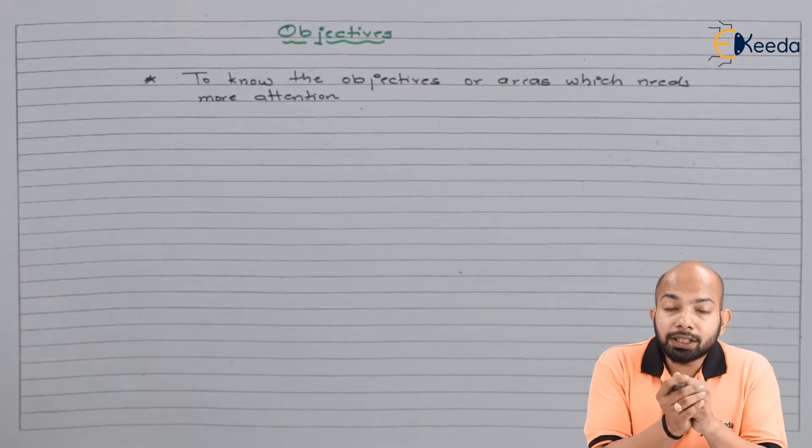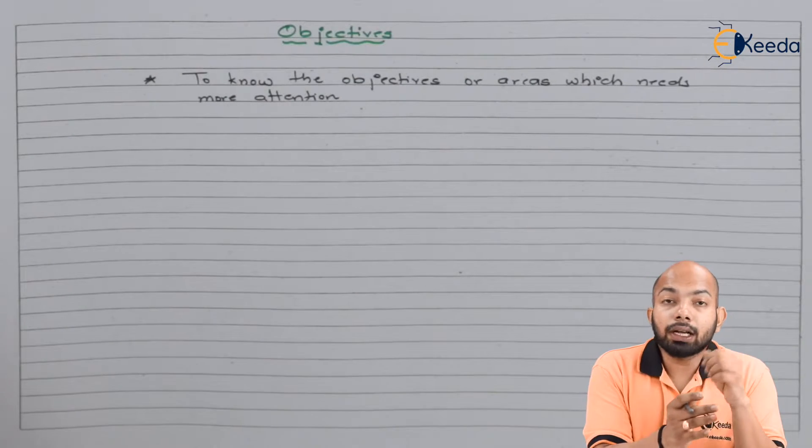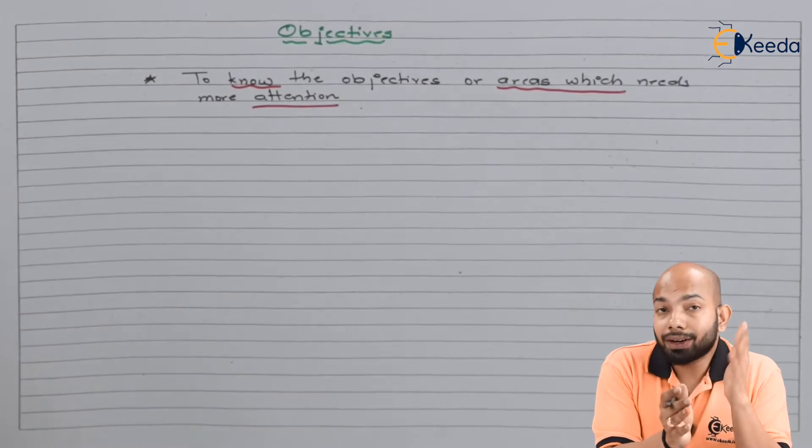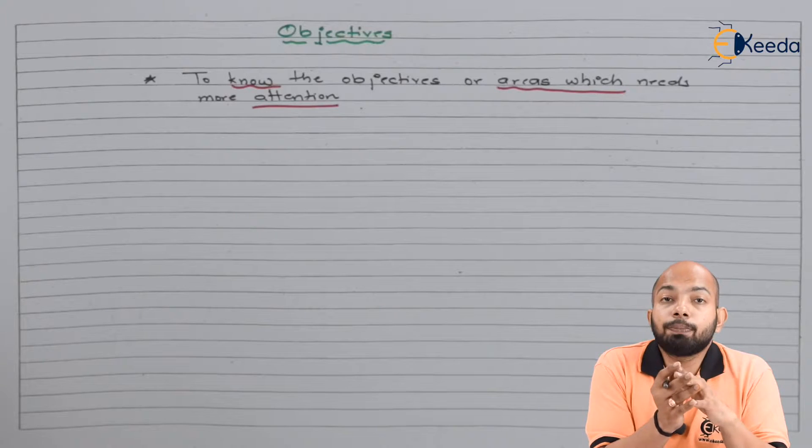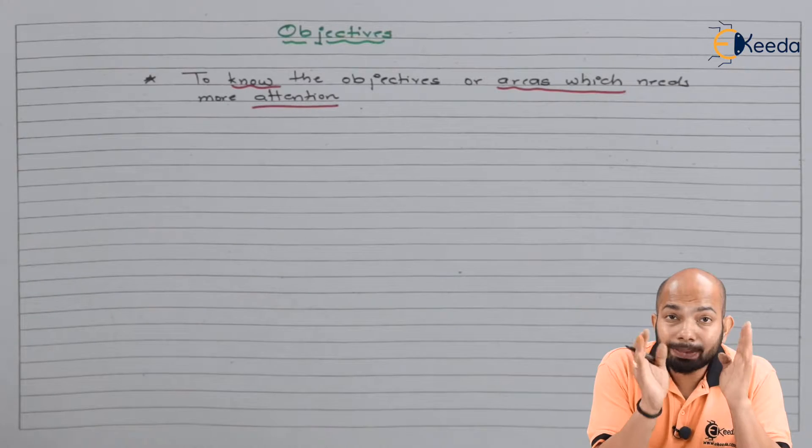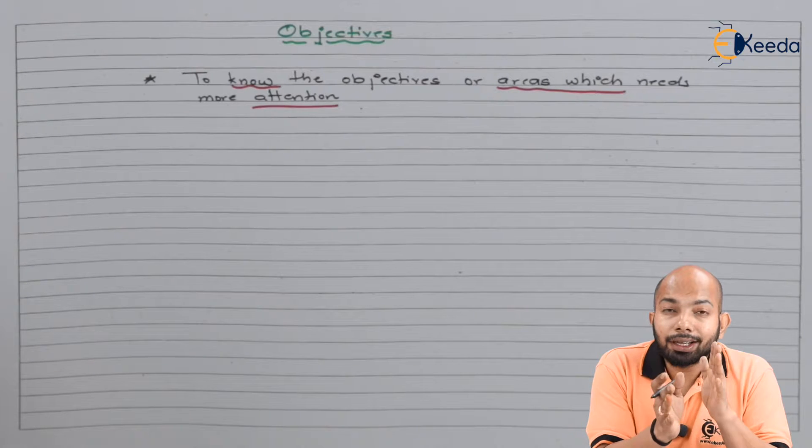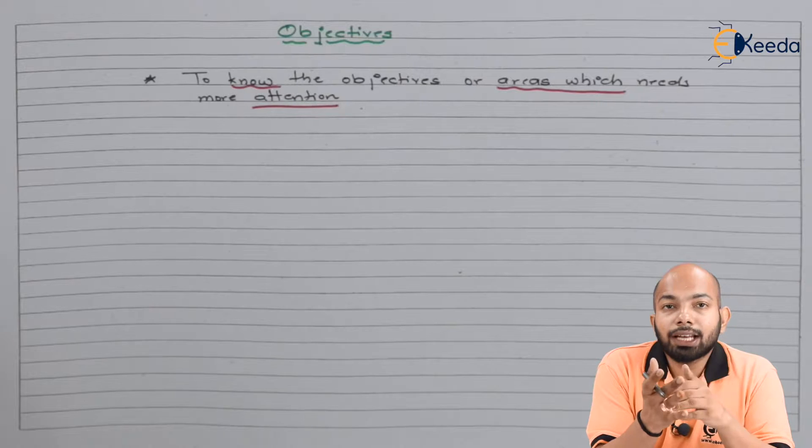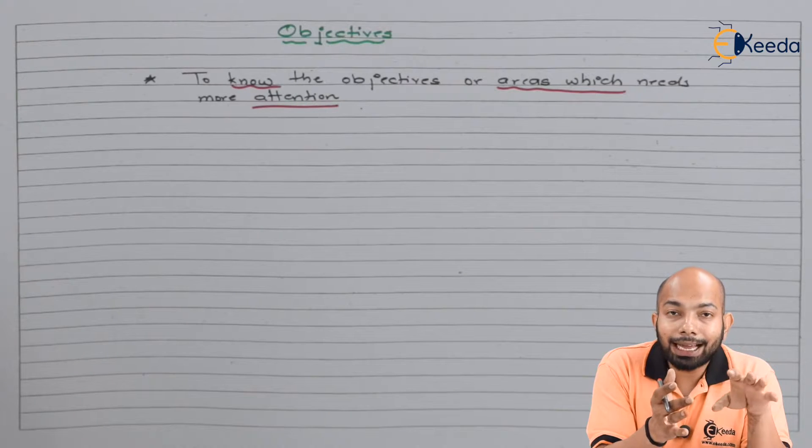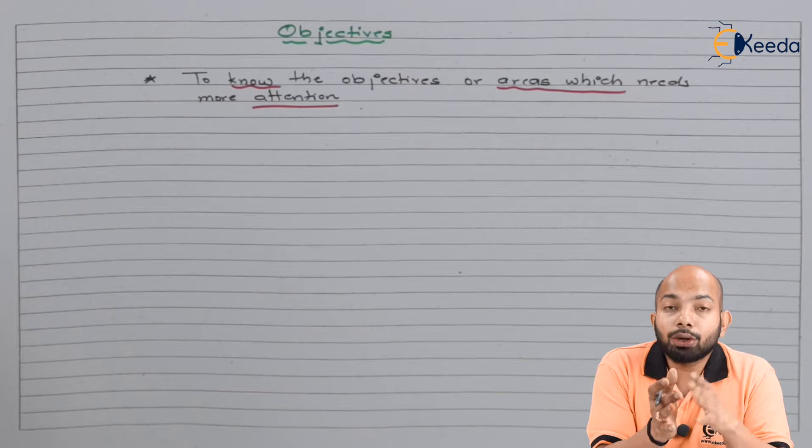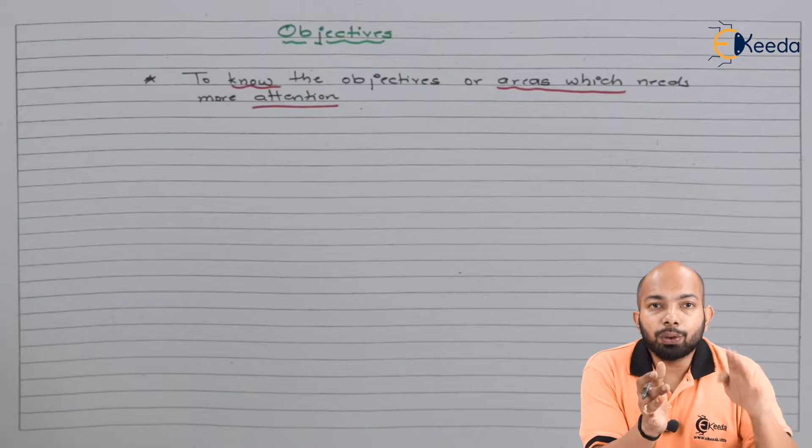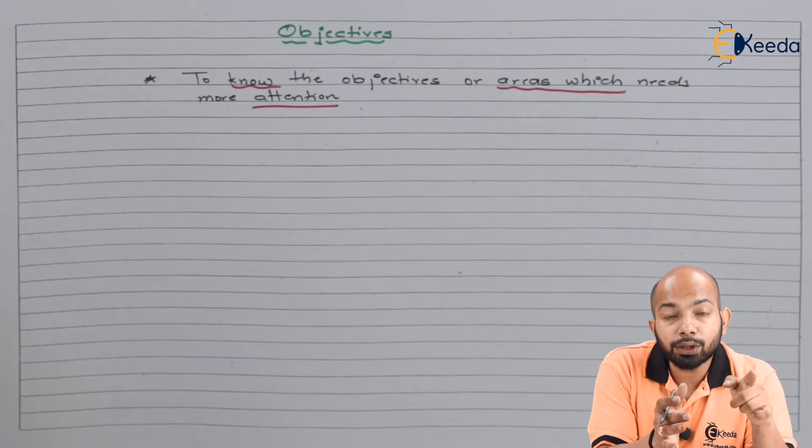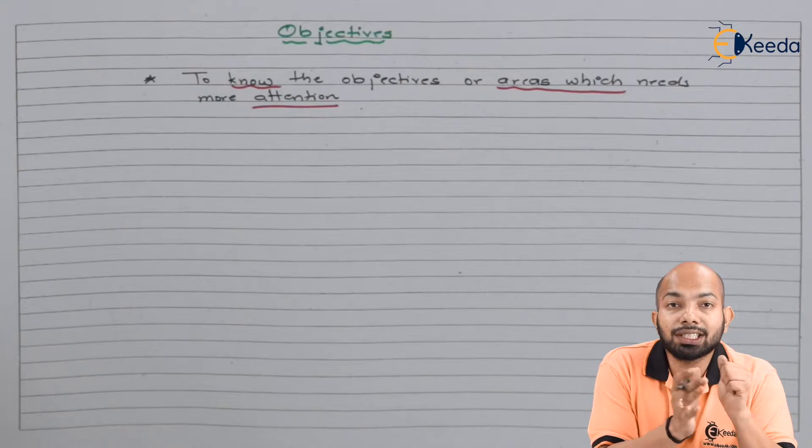The first objective is to understand which area requires more attention. When you're running a business, you cannot focus all your attention on one specific area. You need to be multitasking and have attention on different areas. So sometimes it happens that one area gets lacked out. Ratio analysis can help you understand which area requires more focus, and accordingly you can put more focus in that area compared to others.